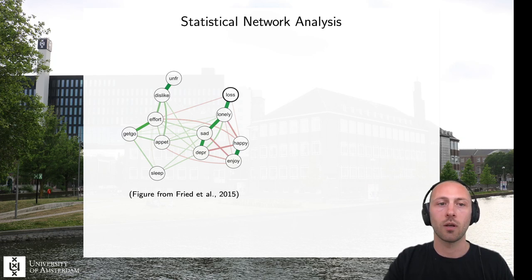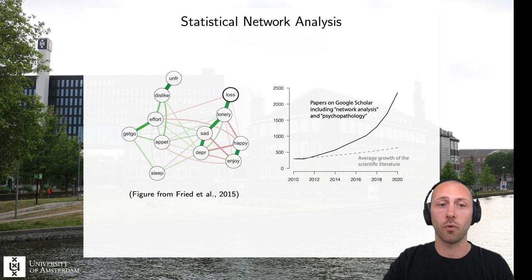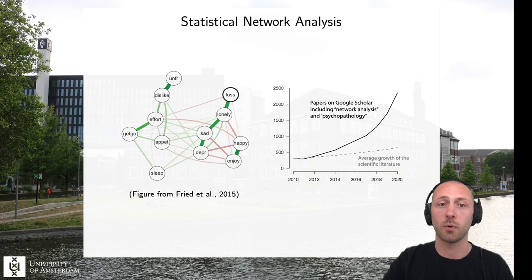Probably the most commonly used network model is the Gaussian graphical model, which captures the partial correlation between variables, and here's one example of such a model. These statistical network models have become incredibly popular in the last decade or so since the network approach has been introduced, as can be seen by looking at the papers on Google Scholar that appear with the keywords network analysis and psychopathology. We now have a huge literature of hundreds and hundreds of papers modeling the pairwise statistical relationships between individual symptoms and related variables.